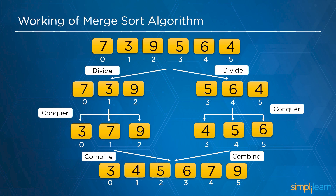Next, we sort all these elements in ascending order. By doing so, the first half becomes 3, 7 and 9, and the right half becomes 4, 5 and 6. After merging all of them, we will have the sorted array: 3, 4, 5, 6, 7 and 9.